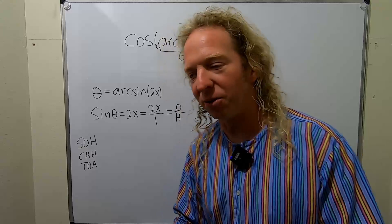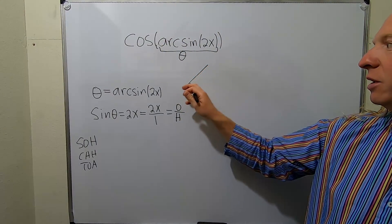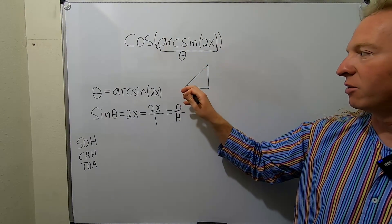And now we draw a triangle. So we draw a little triangle here. So there's our triangle. There's our theta.